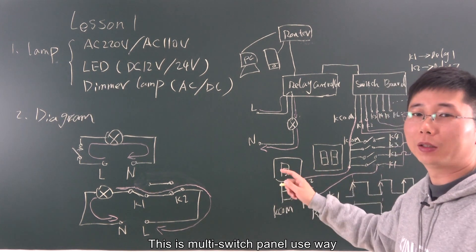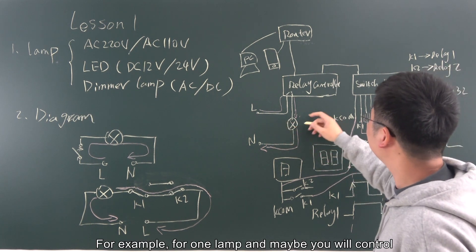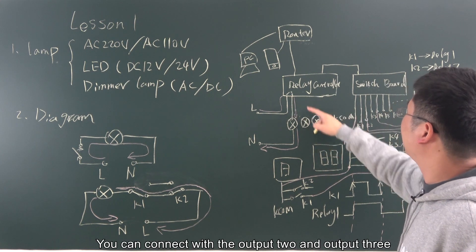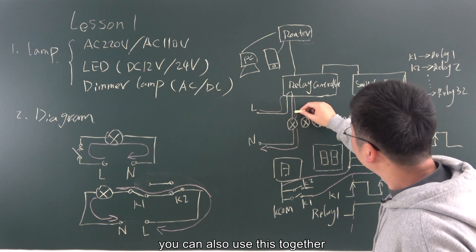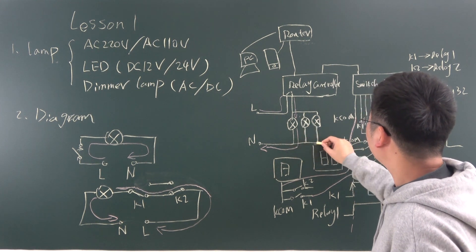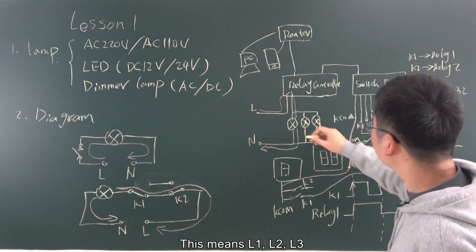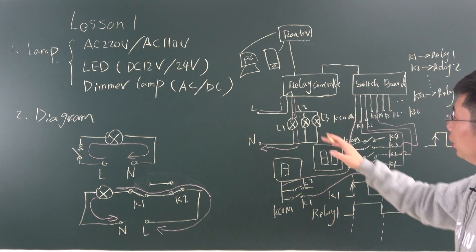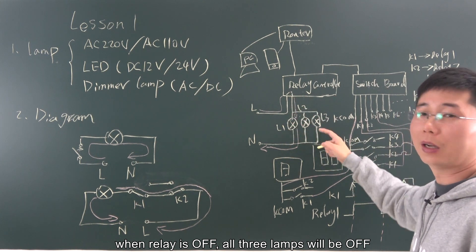Okay, this is multi switch panel to use the way. And if you want to control more lamps, this we have for example for one lamp. Maybe you will control two lamp or three lamp. This is the relay output 1. You can connect with the output 2 and output 3. But if you want to save the channel number, you can also use this together. I can use this three lamp connected together, controlled by the relay 1. This means L1, L2, L3. So when you turn on the relay 1, the three lamp will on at the meantime. And when the relay is off, all three lamps will be off.